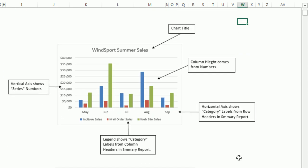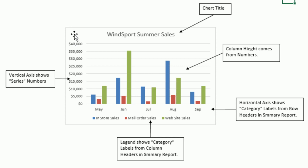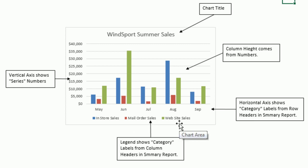Let's scroll down and look at what all the different chart elements are. This is a column chart. We have a chart title, and the heights of the columns come from the numbers. We have a vertical axis and a horizontal axis. The numbers — both the axis values and the column heights — are called series. The horizontal axis labels and the legend items are called categories. Inside the chart dialog box pointing to cells, the numbers are series and the labels are categories.